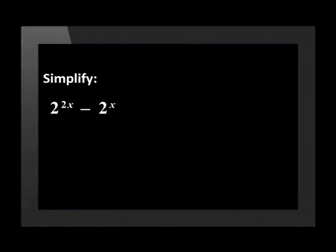Simplify 2 to the power of 2x minus 2 to the power of x. There are two terms in this expression — we know this because of the minus sign that separates them. Remember that the laws of exponents can only be applied within one term.